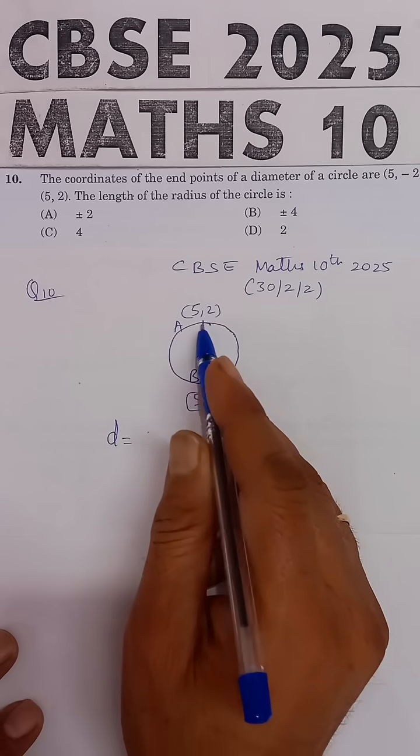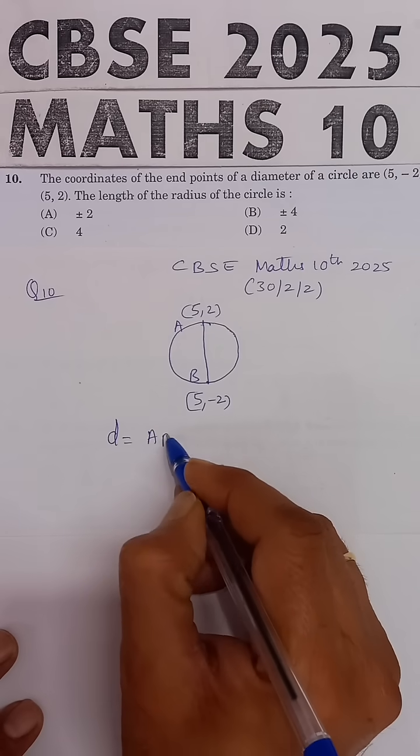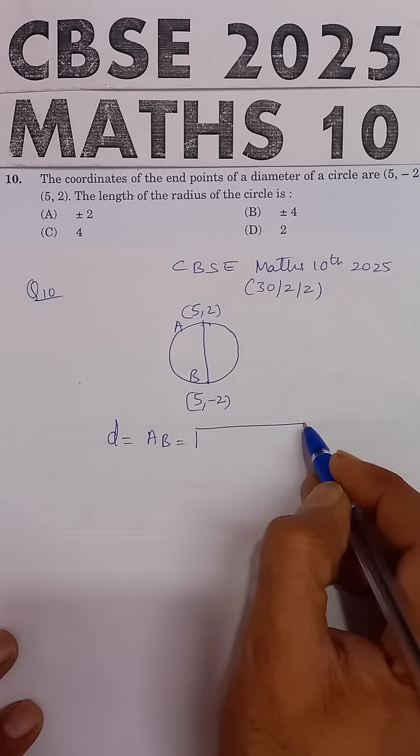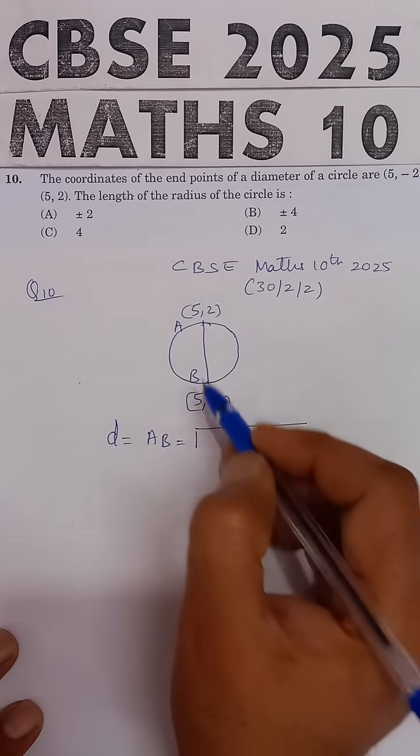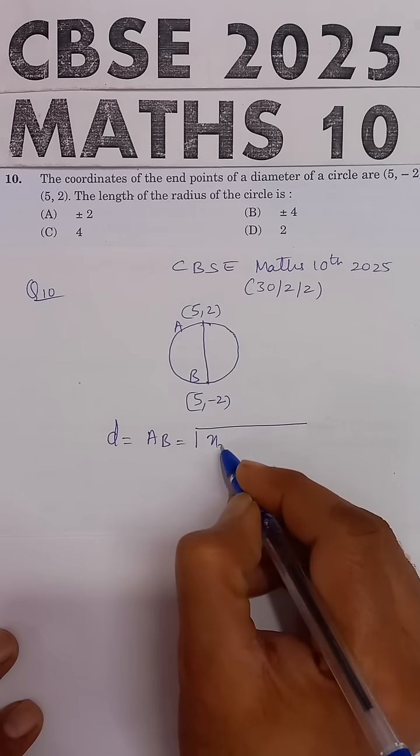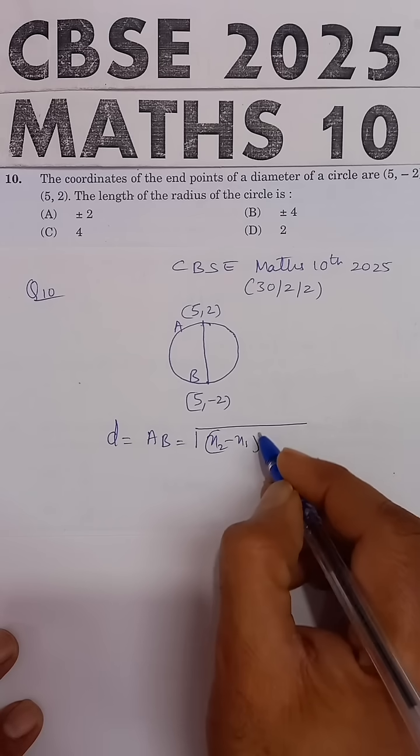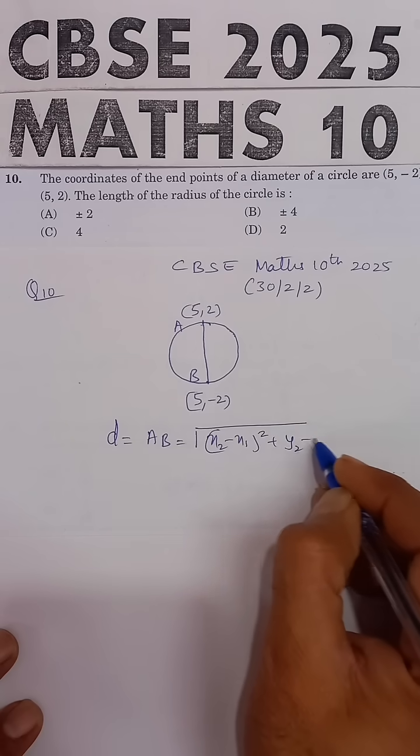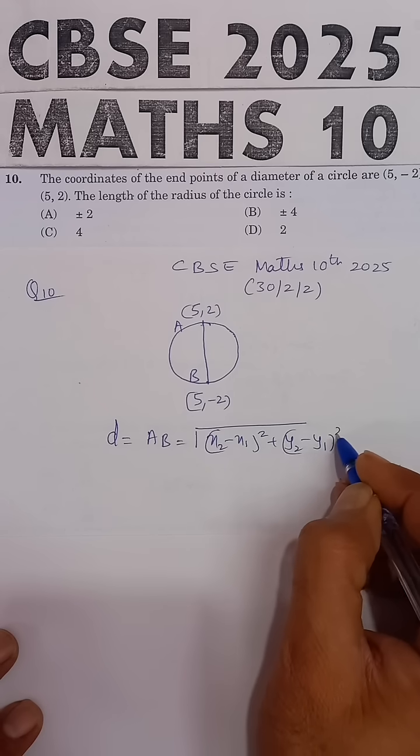Distance formula: the distance between points A and B is equal to square root of (x2 minus x1) whole square plus (y2 minus y1) whole square.